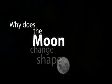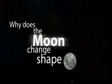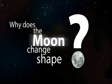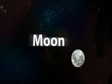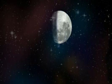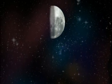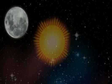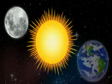Why does the Moon change shape? We all know that the Moon is a sphere, so why doesn't it appear spherical all the time? Before looking at the answer to this, we need to consider how the Moon, the Sun and the Earth are connected.